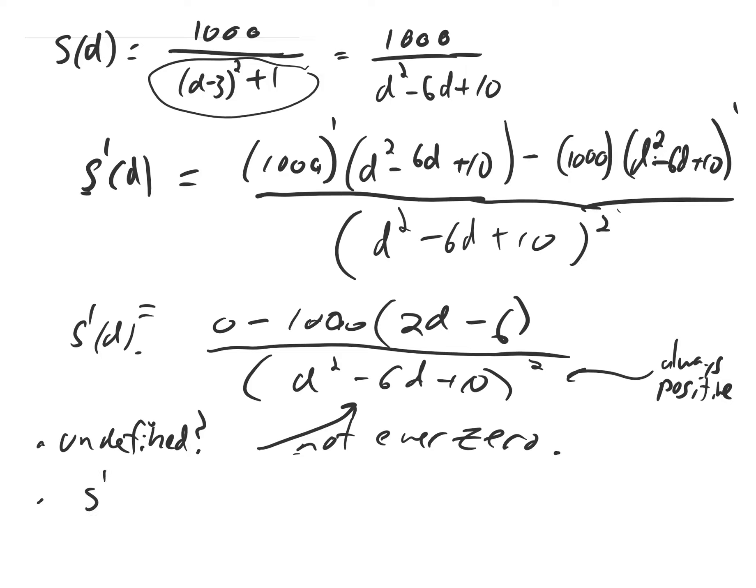The next question we ask about s prime is, does s prime of d equal 0 anywhere? If you look at the denominator, the denominator is never going to be 0, which is good. And if we look at the numerator, when is this thing equal to 0? That's negative 1,000, 2d minus 6. When does this equal 0? Well, you can divide both sides by negative 1,000, and we'll see that this is equal to 0 at d equals 3. So we found one critical number.